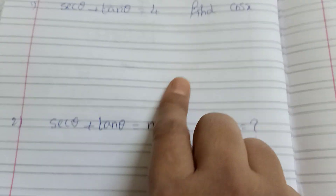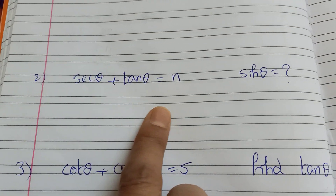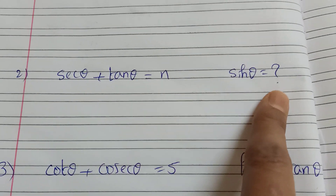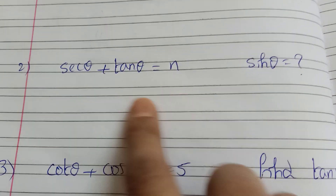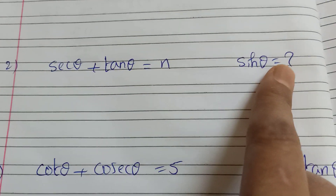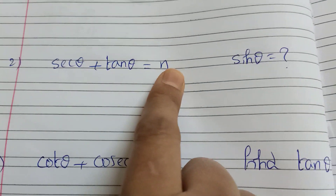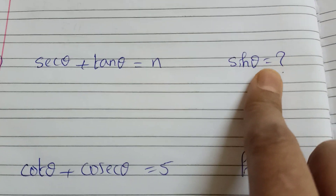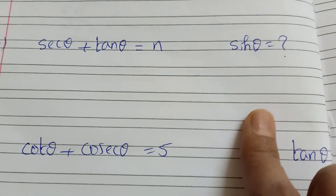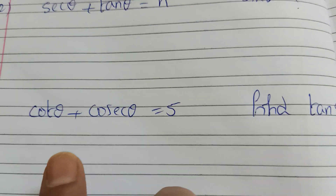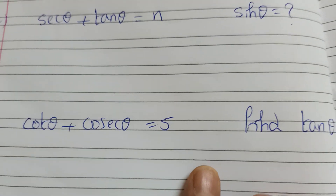Let's start with a few functions. We will discuss this model: sec θ + tan θ equal to n, sin θ, or cos θ. That means we have two functions — sum of each. Another example: cos θ + cosec θ = 5.